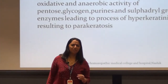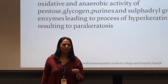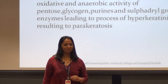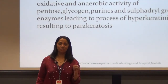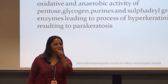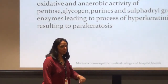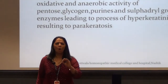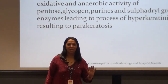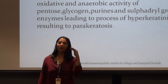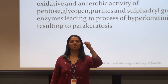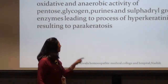Imagine a machine that normally produces 5,000 cells now having to produce 20,000 cells — the workload increases and product quality suffers. Similarly, in psoriasis, cells formed are not exactly like normal body cells. Rather, they are partially cornified cells — a process called parakeratosis. Since they are partially cornified, they are loosely attached and have a tendency to shed off. This is the reason we see scaling in psoriasis.